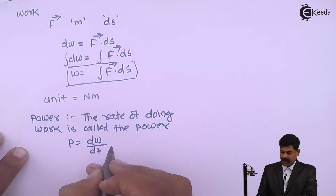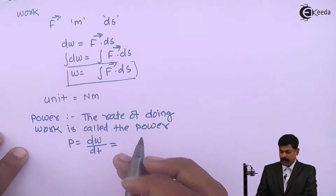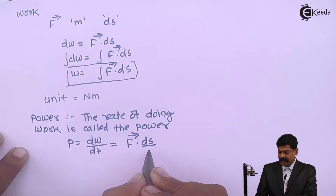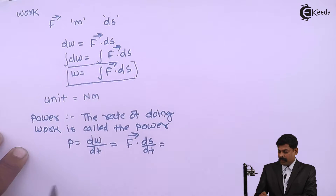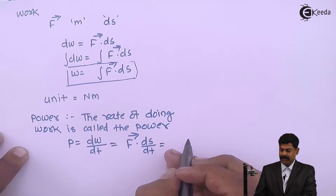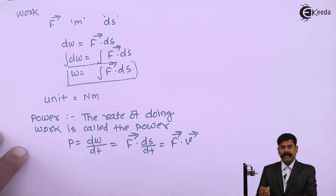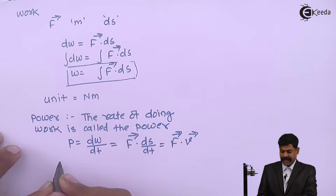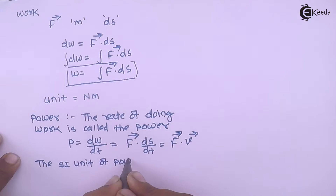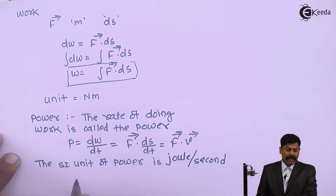So this equals d by dt of work. We know that work done equals force multiplied by displacement, so here it becomes force into ds by dt. This term, ds by dt, is the rate of change of displacement — that is velocity. So power equals F dot v. The SI unit of power is joule per second, sometimes called Watt.